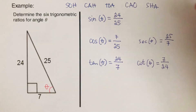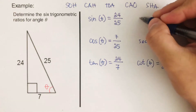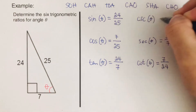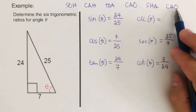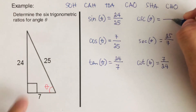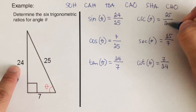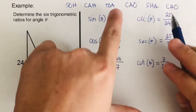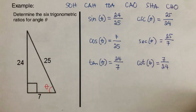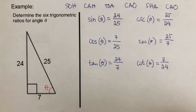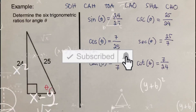The last one is cosecant, represented by CHO, so cosecant theta is equal to hypotenuse over opposite. Our hypotenuse is 25 and the opposite of theta is 24. Again, as you can see, the fractions have been flipped. That's it — if you found this video helpful, hit like and subscribe for more math videos. See ya!